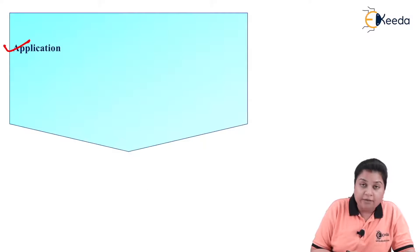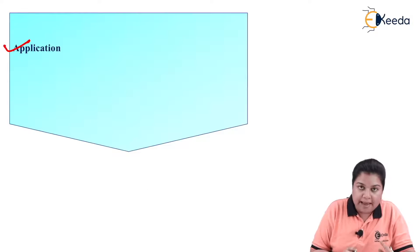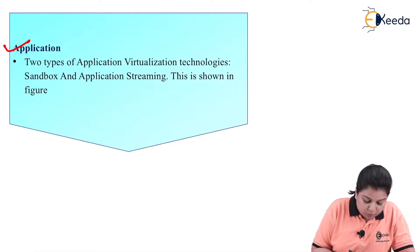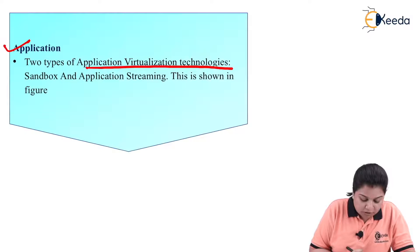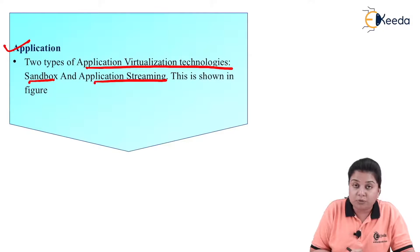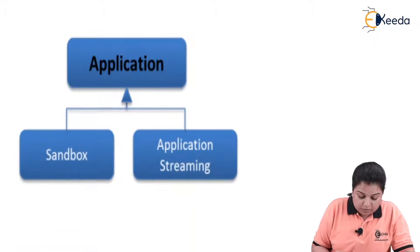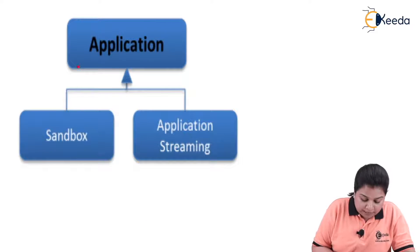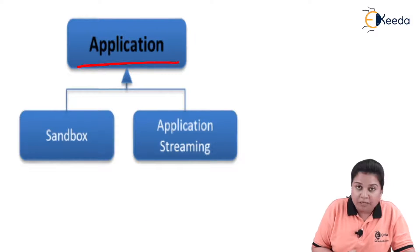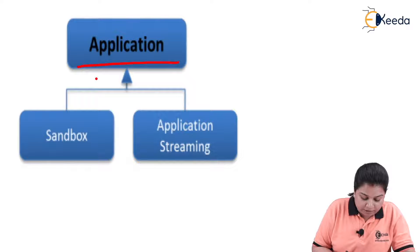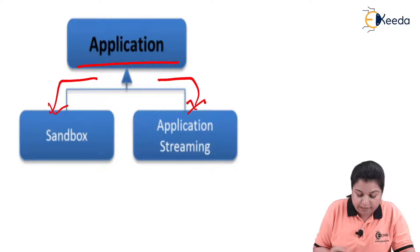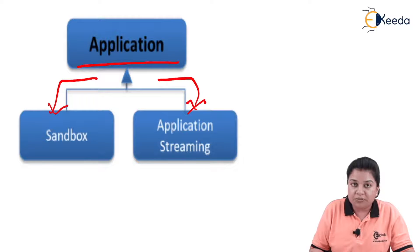Coming to the application domain, the two types of application virtualization technologies are sandbox and application streaming. This is again described in a figure where the main class is divided into two subclasses: sandbox and application streaming.